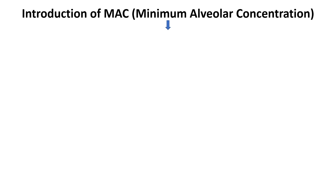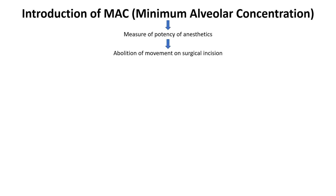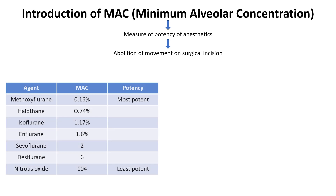In 1965, Eger et al. introduced the concept of minimum alveolar concentration as a standard measure of potency for volatile anesthetic agents. It measured the potency of inhalational agents based on the common end goal — that is, abolition of movement to surgical incision. A lower MAC value indicates a more potent anesthetic, as less of the agent is needed to achieve the desired effect. For example, isoflurane has a MAC of approximately 1.17%, meaning that a concentration of 1.17% in the alveoli is sufficient to prevent movement in 50% of patients during surgery.